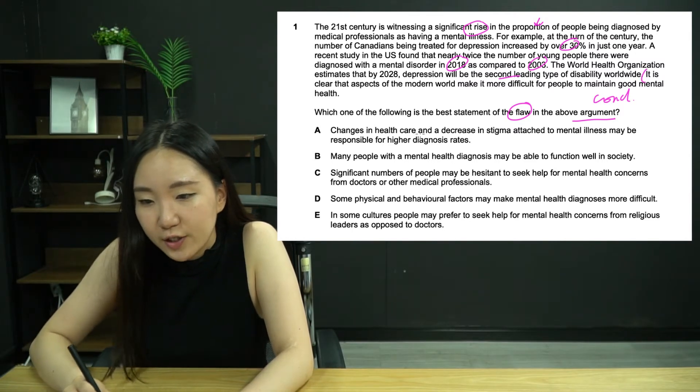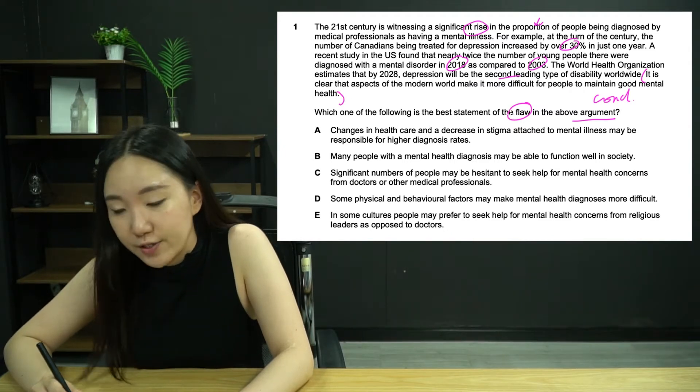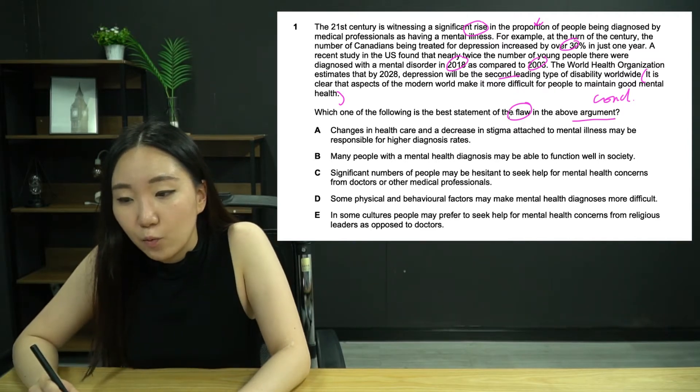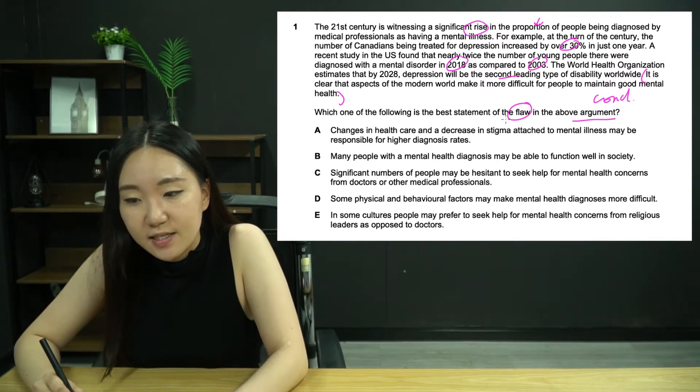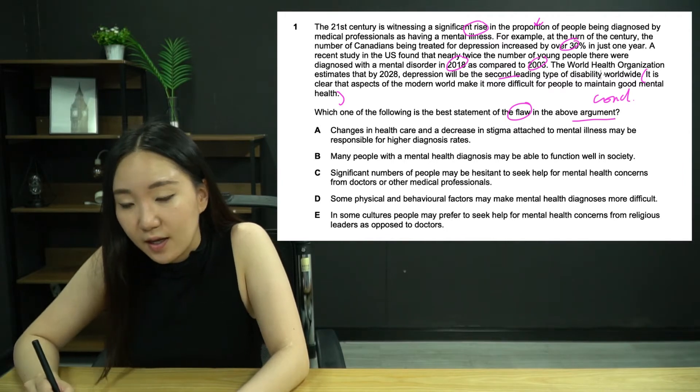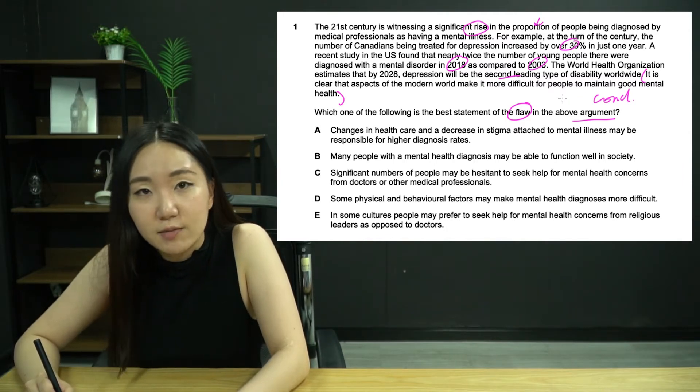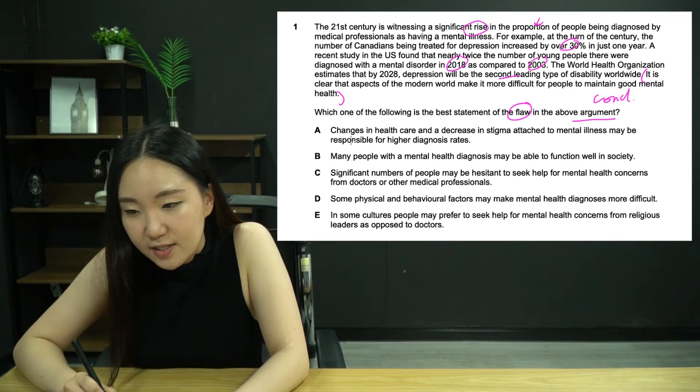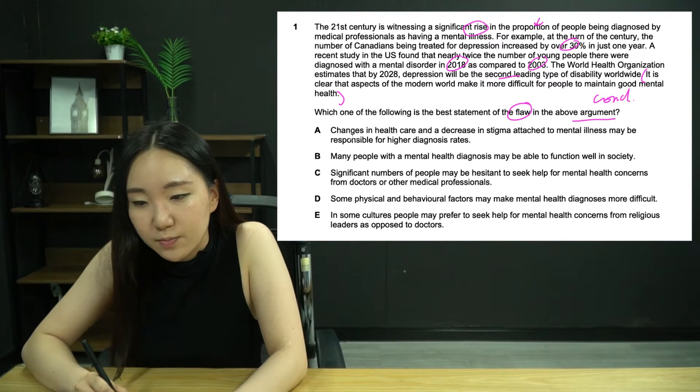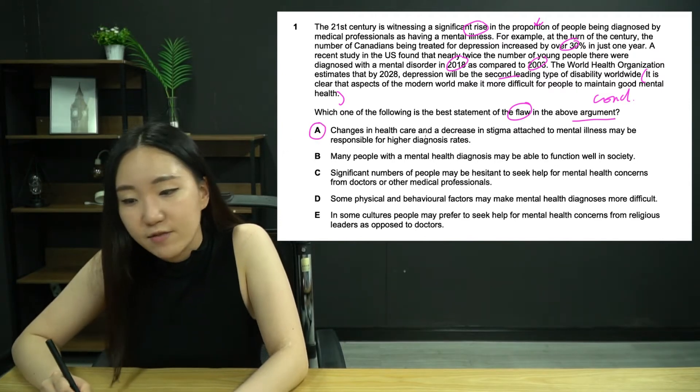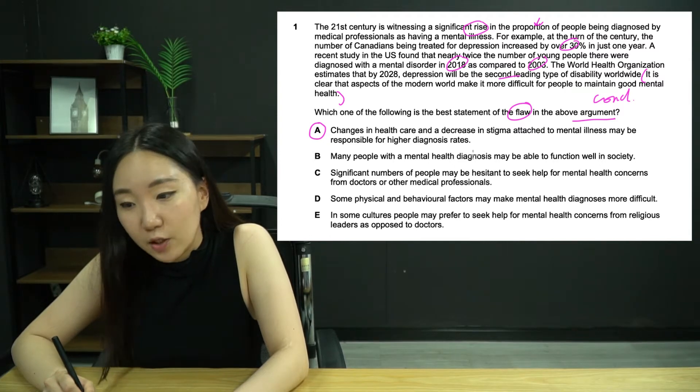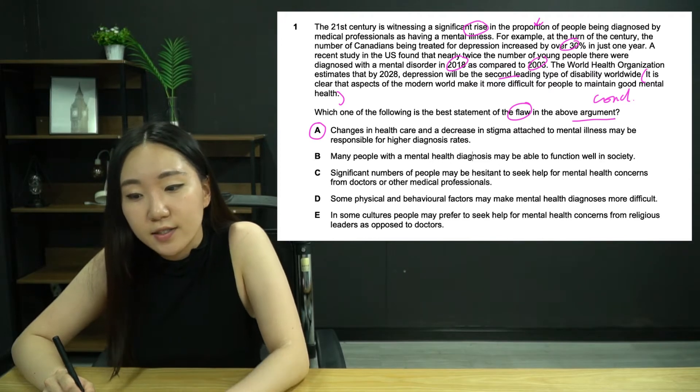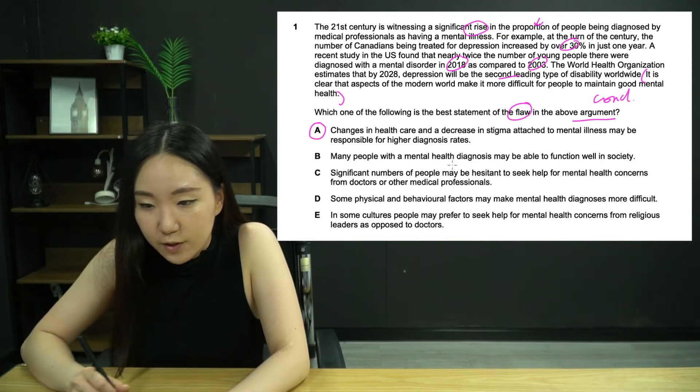The conclusion is: It is clear that aspects of the modern world make it more difficult for people to maintain good mental health. The flaw is what else could be causing this higher diagnosis rate? We're looking for something else that explains the number of diagnoses going up. Answer A: changes in healthcare and a decrease in stigma attached to mental illness may be responsible for high diagnosis rates. That fits in very nicely indeed.